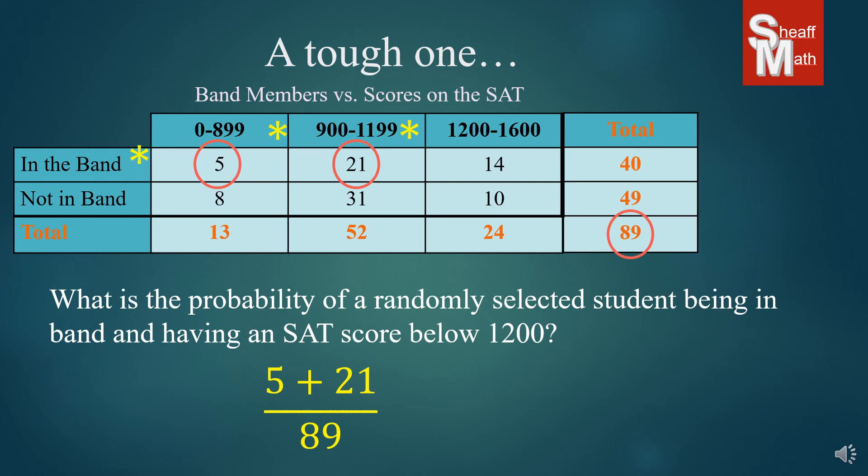So we're going to add 5 plus 21 over 89, and our probability is 26 out of 89 chance of being in the band and getting a score below 1200.